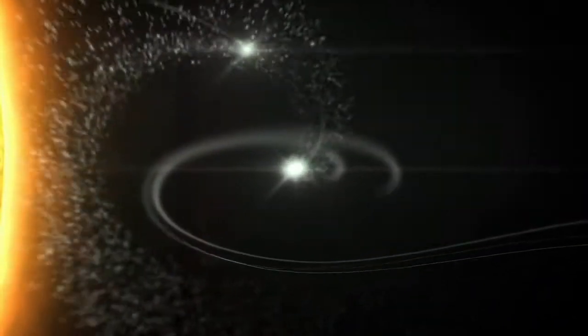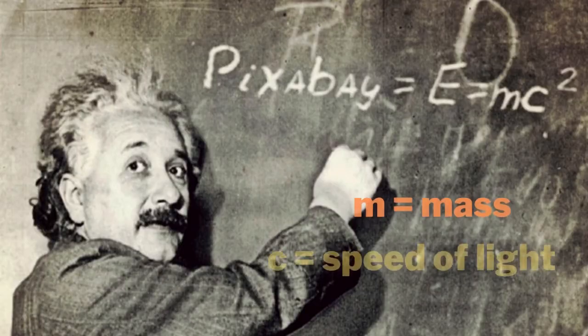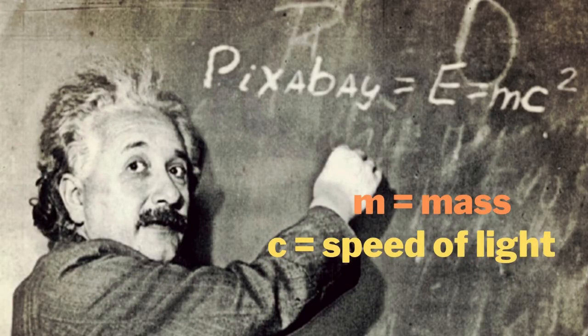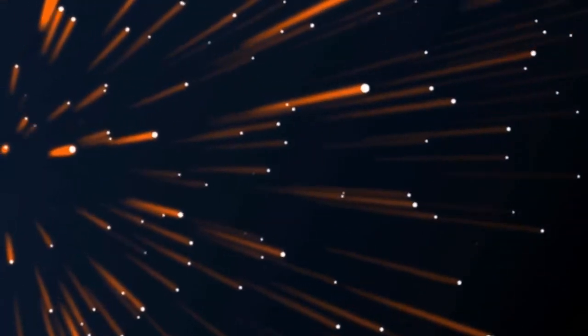A little mass is transformed into a lot of energy. Remember that equation E=mc², where m is the mass and c is the speed of light. Since light travels very fast, c² is huge.